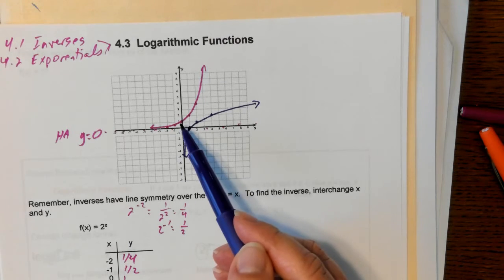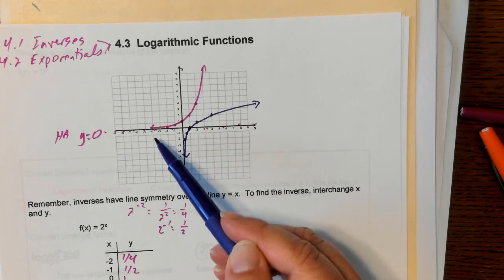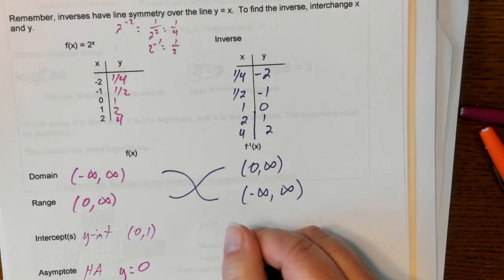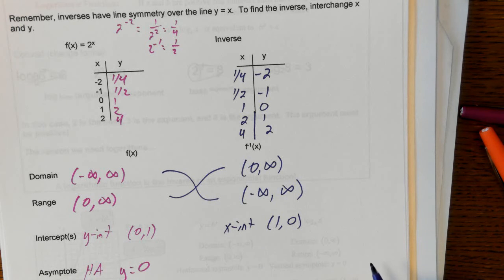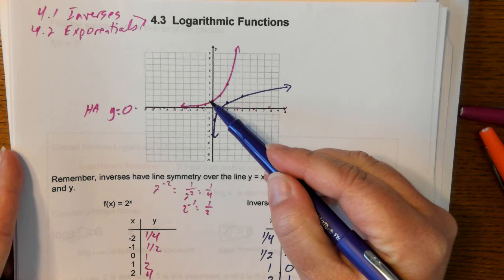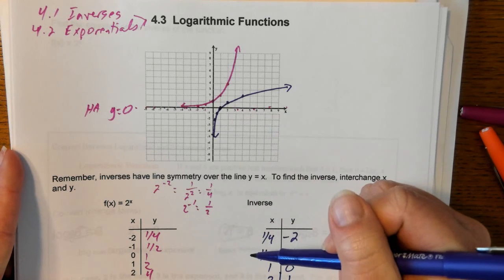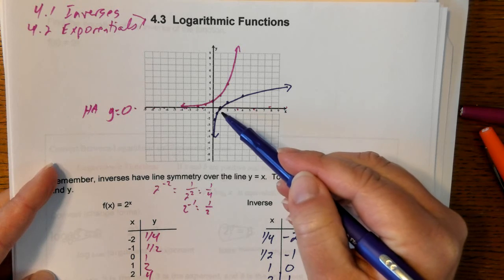For intercepts: the original function had a y-intercept, but this new inverse function does not touch the y-axis. Instead, it touches the x-axis at the point (1, 0) — there's an x-intercept at (1, 0). Notice that point carefully. Remember how (0, 1) is a good point to memorize for exponential functions? Well, (1, 0) is the key point to memorize for these inverse functions of exponentials — it's the mirror image of (0, 1).